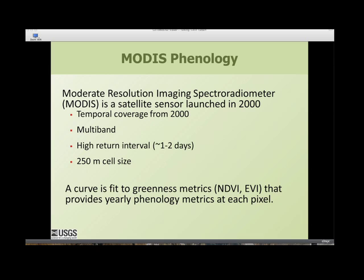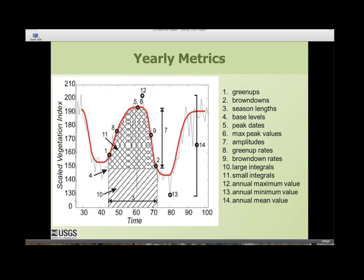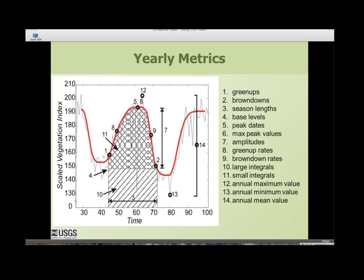We have wall-to-wall coverage of greenness at one or two day intervals. The initial thought from a scientist or manager is that this is fantastic data they want to apply to their management question. But the problem is there is so much data — 180 grids per year, noisy data, cloud cover — that it becomes very difficult to work with the raw data. So what they do is condense it into a phenology metric.